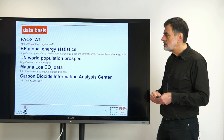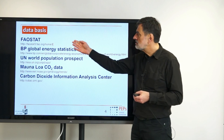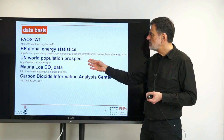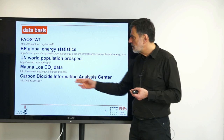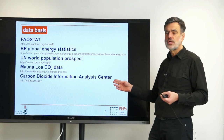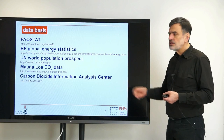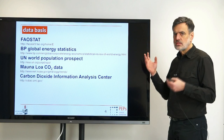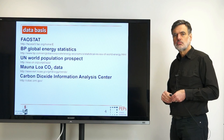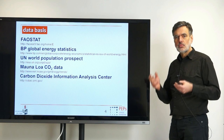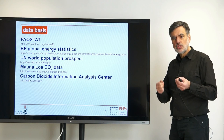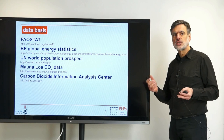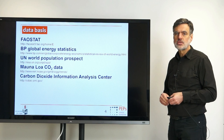The databases used are commonly publicly available: FAOSTAT from the United Nations, BP Global Energy Statistics, the UN World Population Prospects, CO2 data from Hawaii, and the Carbon Dioxide Information Analysis Center. Beyond these data, only some conversion factors and very simple data — like the mass of the atmosphere — are needed to set up a balance for how much fossil resources we burn, how that is released into the atmosphere, how CO2 also winds up in the oceans, and how the climate will change in the future.